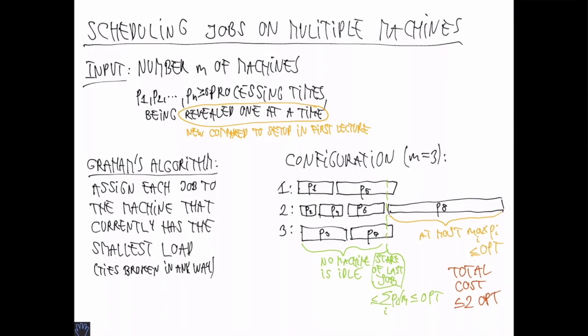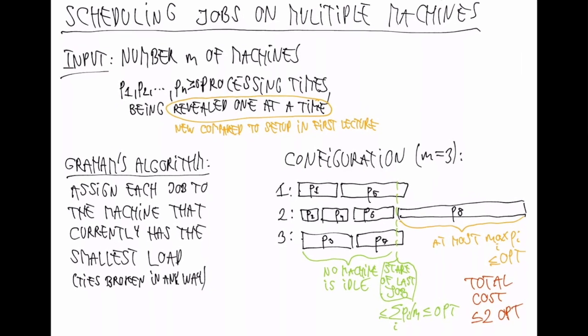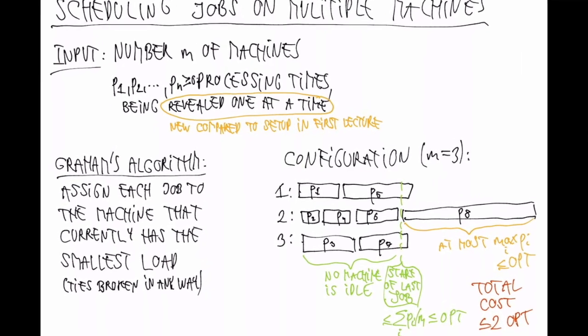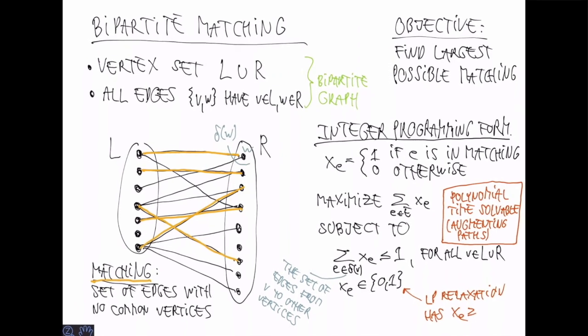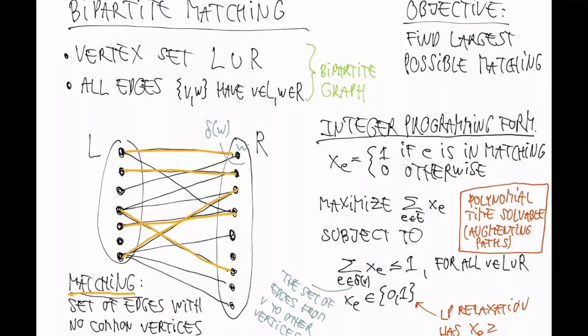Finally, some algorithmic problems are hard because they require online decisions to be made before the full input is available. For example, you may need to schedule computations on many machines, but you are not given the resource requirements for the jobs up front, but rather one by one in an online fashion.